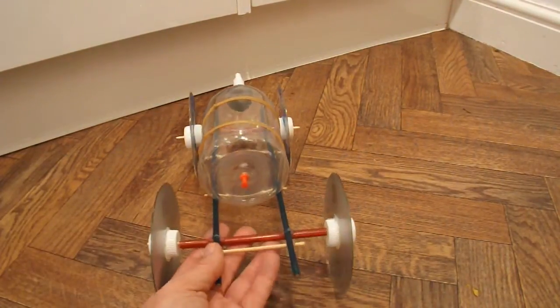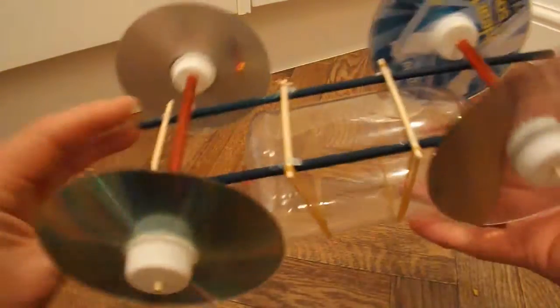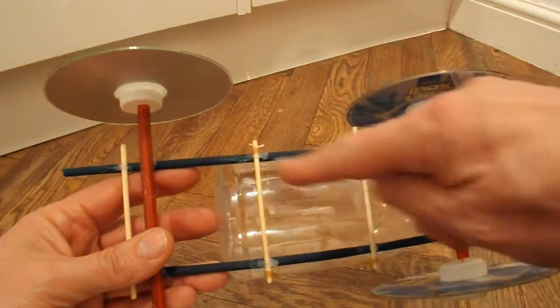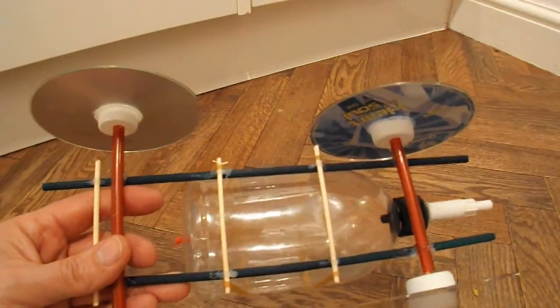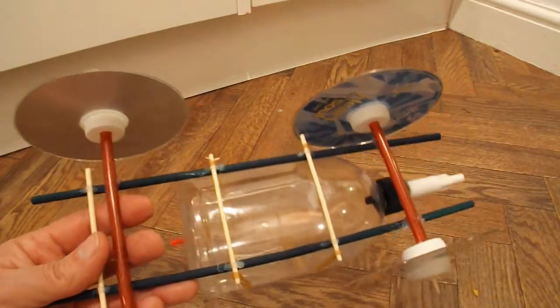Made some very minor modifications to the car. Put these cross members on it just so that I got somewhere to hook the rubber bands on to hold this shaped bottle in place. Other than that, it's the same car as last time.